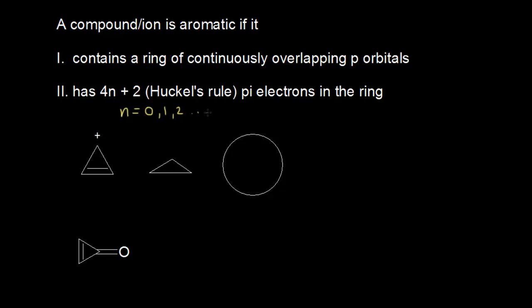We can use these criteria to analyze the cyclopropenyl cation. Here is my cyclopropenyl cation right there. If I look at how many pi electrons it has, that would be 2 pi electrons in the ion. Let me go ahead and write 2 pi electrons here.